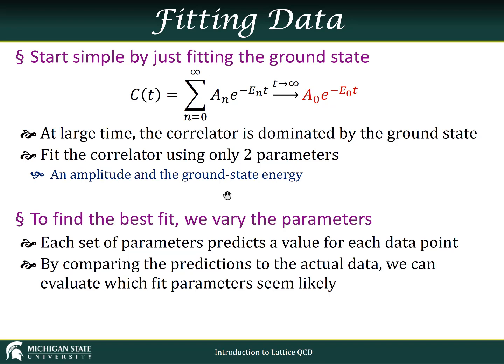To find the best fit, what we want to do is vary these parameters, a sub nought and e sub nought. Each set of parameters is going to predict a value of our two-point function at each time, and we'll compare those predictions to the actual data and figure out which set of parameters seem the most likely.